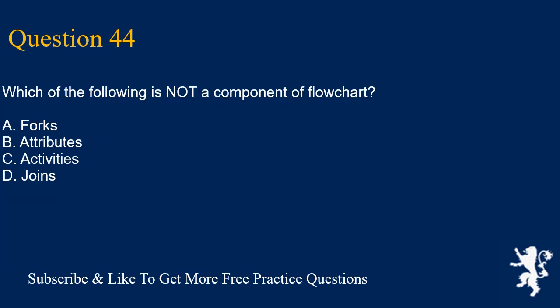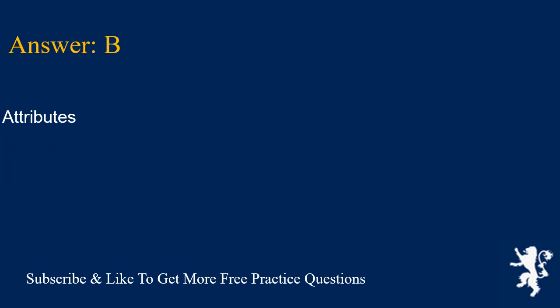Question 44: Which of the following is not a component of a flowchart? A. Forks. B. Attributes. C. Activities. D. Joins. Answer is B. Attributes.